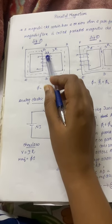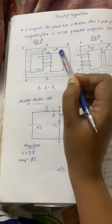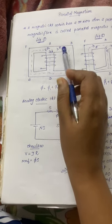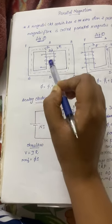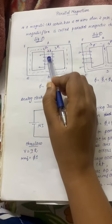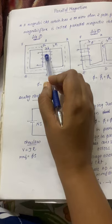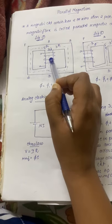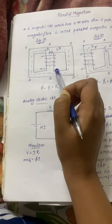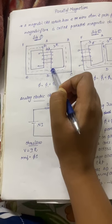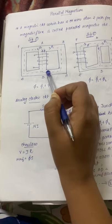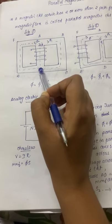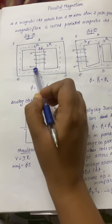From the coil, the magnetizing effect starts, and we need to trace the path followed by flux phi. If the flux phi passes through the magnetic material in a divided manner, then this comes under parallel magnetism. If the flux phi passes through the magnetic material in an undivided manner, then it comes under series magnetism. It depends on the structure of the magnetic material given in the problem.